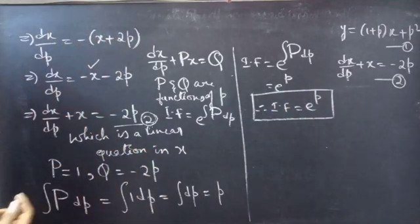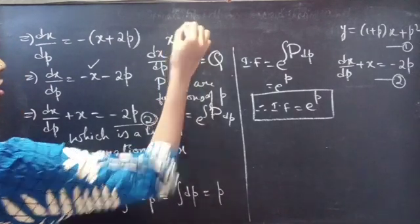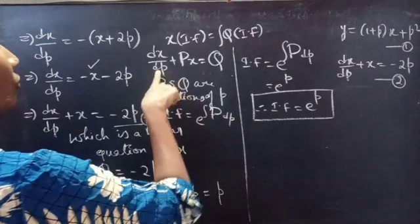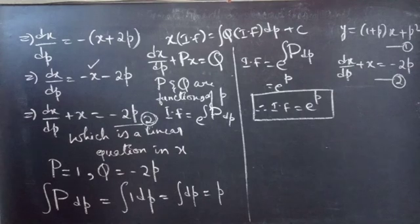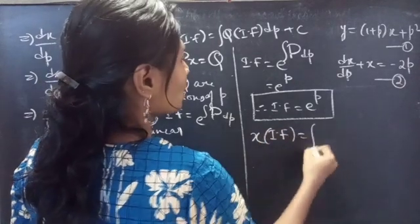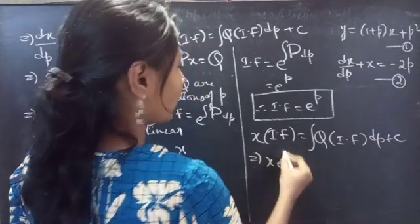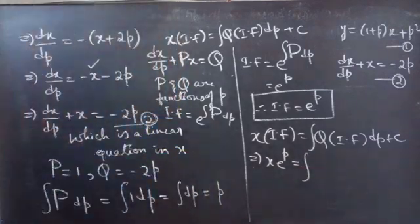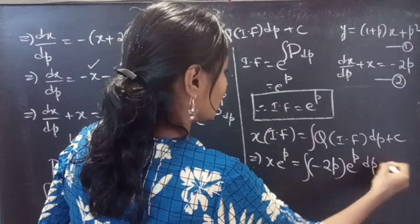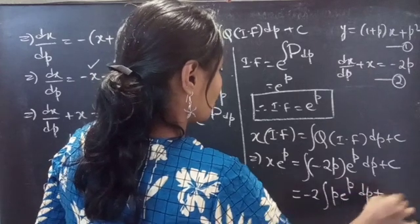Now we use the general solution formula: the dependent variable times the integrating factor equals the integral of Q times the integrating factor dp plus c. Applying this: x · e^p = ∫(−2p) · e^p dp + c, which equals −2 ∫p · e^p dp + c.